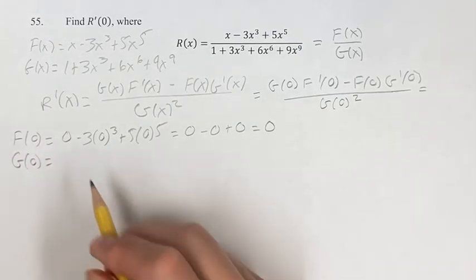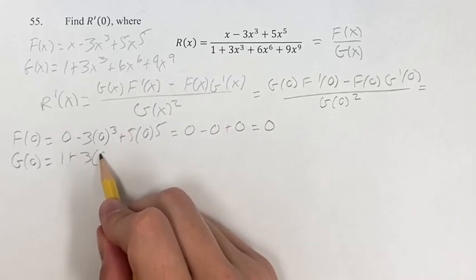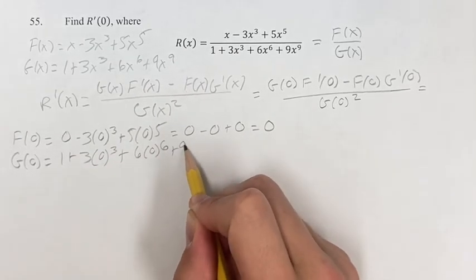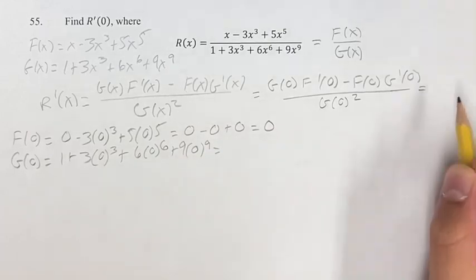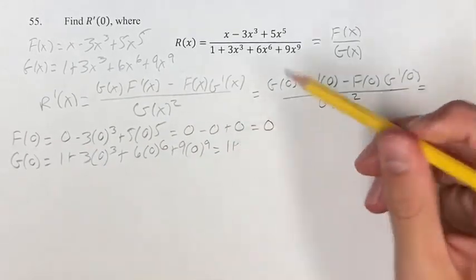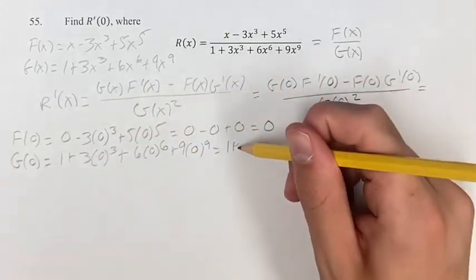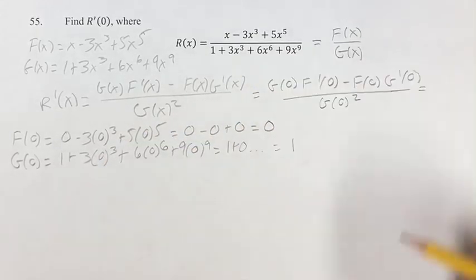g of 0 is 1. Again, doing the same thing, plugging in 0 for x, 1 plus 3 times 0 to the 3rd plus 6 times 0 to the 6th plus 9 times 0 to the 9th, which is 1 plus 0 plus 0 plus 0. So this is just equal to 1.